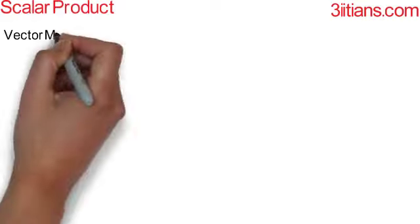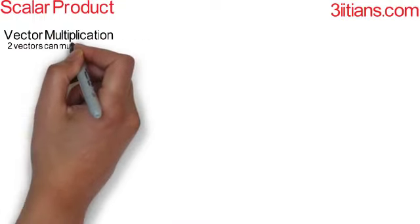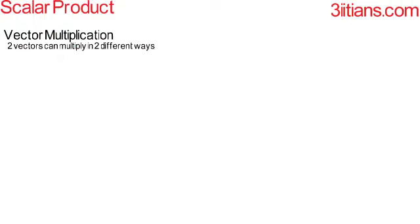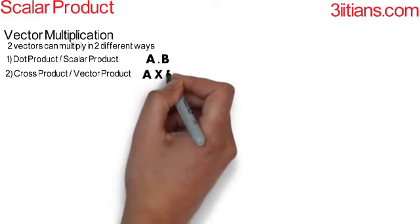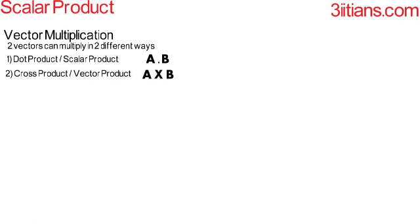In this lecture we are going to discuss scalar products. Before we discuss scalar products, let us briefly discuss vector multiplication. Two vectors can multiply in two different ways: dot product, also called scalar product, defined as A dot B, represented by placing a dot between the two vectors; and cross product, also called vector product, represented as A cross B, by placing a cross between the two vectors A and B.